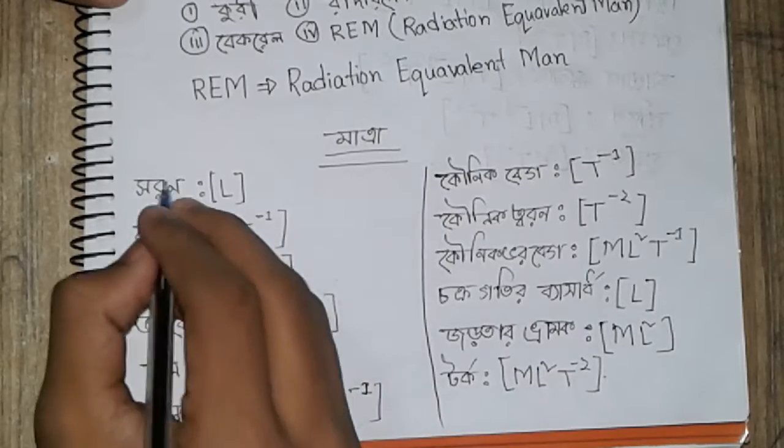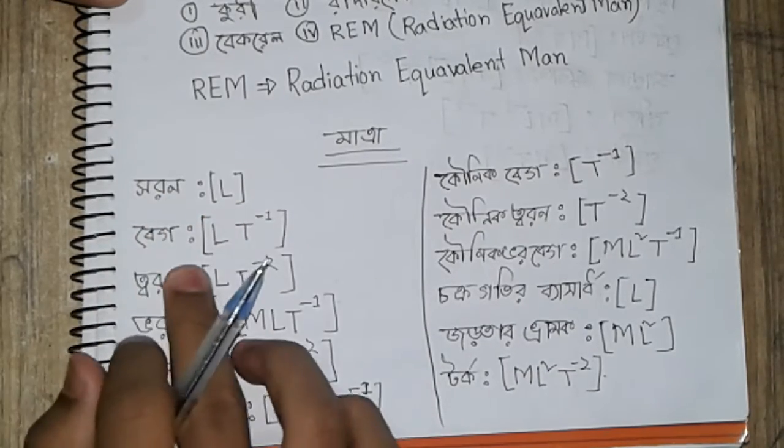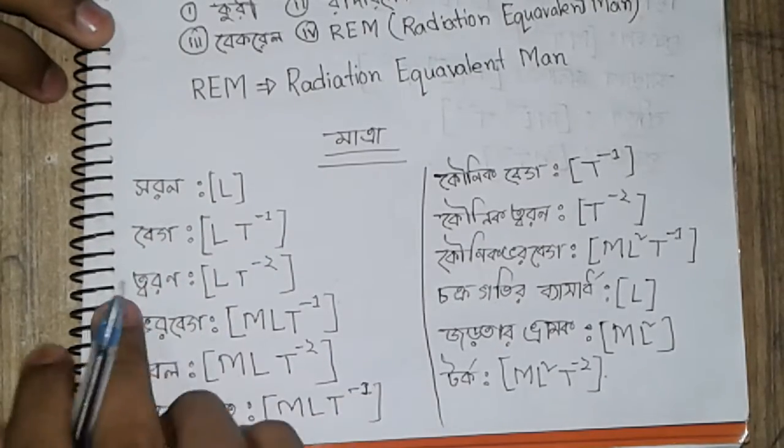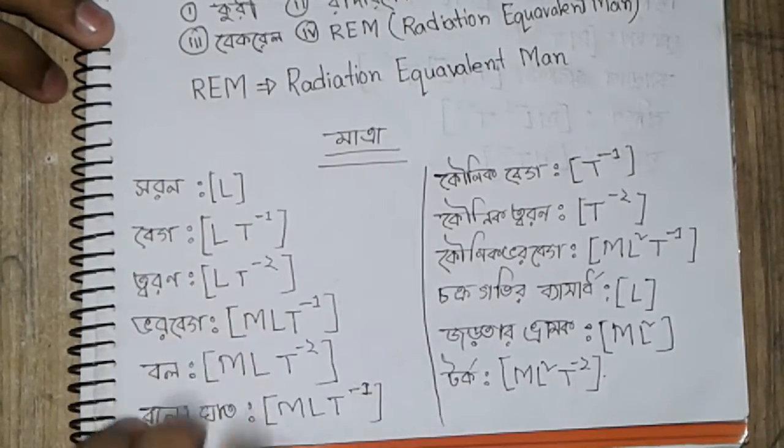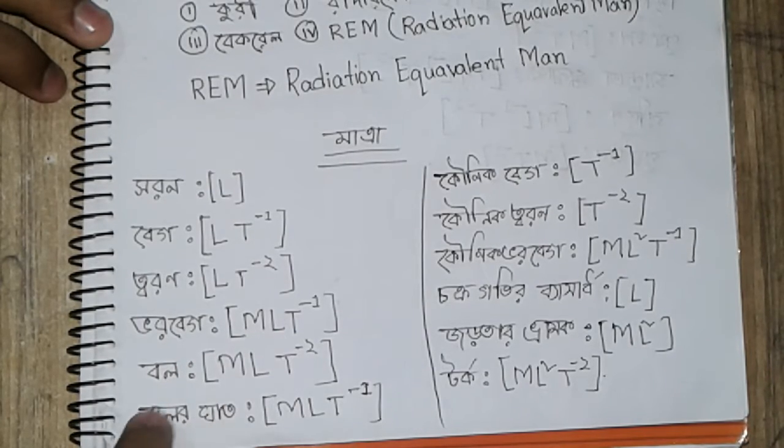There are different dimensional formulas: LT inverse one, LT inverse two, and MLT inverse one that we need to understand.